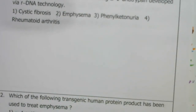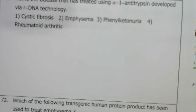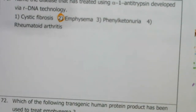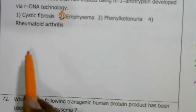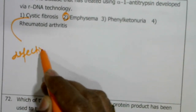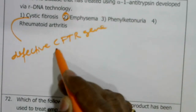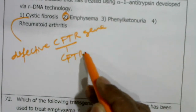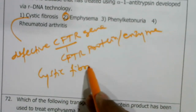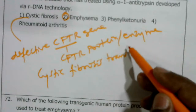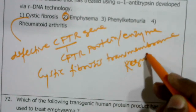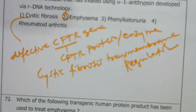Alpha-1 antitrypsin is a protein produced through recombinant DNA technology used to treat genetic emphysema. Cystic fibrosis is caused by a defective CFTR gene — cystic fibrosis transmembrane regulator — which produces the CFTR protein. Phenylketonuria is another genetic disease.